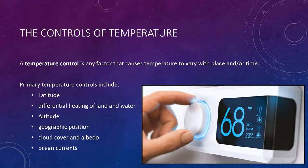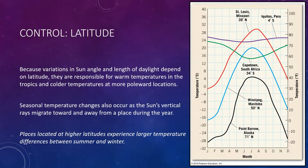Starting with latitude: the most important cause for temperature variations is differences in solar radiation. Because variations in the angle of the sun and length of the day depend on latitude — how far away from the equator you are — they are responsible for warm temperatures in the tropics and colder temperatures at more poleward locations. Seasonal temperature changes at a given latitude occur as the sun's vertical rays migrate toward and away from a place during the year. This figure reminds us of the importance of latitude as a control of temperature.